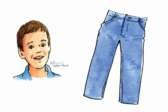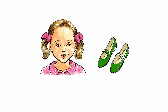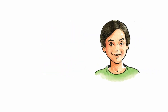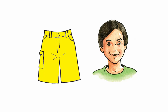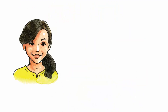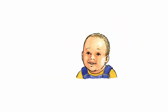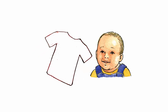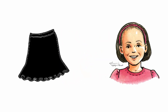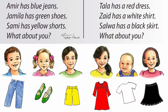Amir has blue jeans. Jamila has green shoes. Sami has yellow shorts. What about you? Tala has a red dress. Zahid has a white shirt. Salwa has a black skirt. What about you?